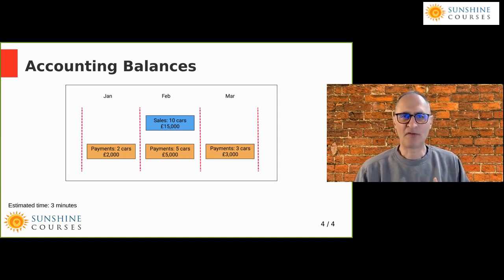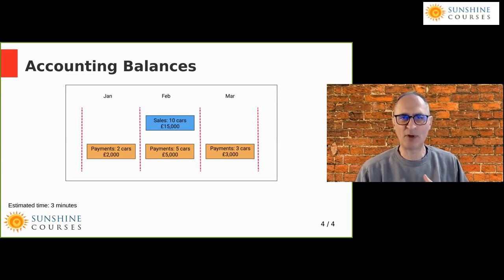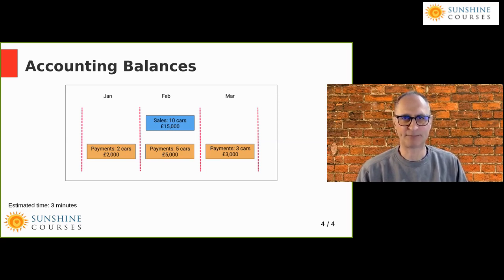But on the face of it, in our cash flows: January shows £2,000 going out, February shows £10,000 coming in, and March shows £3,000 going out. And this is essentially what a balance sheet is all about. A balance sheet is the mechanism by which we move the purchase of two cars in January into February, and similarly, the cars we paid for in March we bring back to February as well. In that way, we're going to match the sales of 10 cars with the purchases of 10 cars all in the same month. The balance sheet is the mechanism by which we effect that transition.